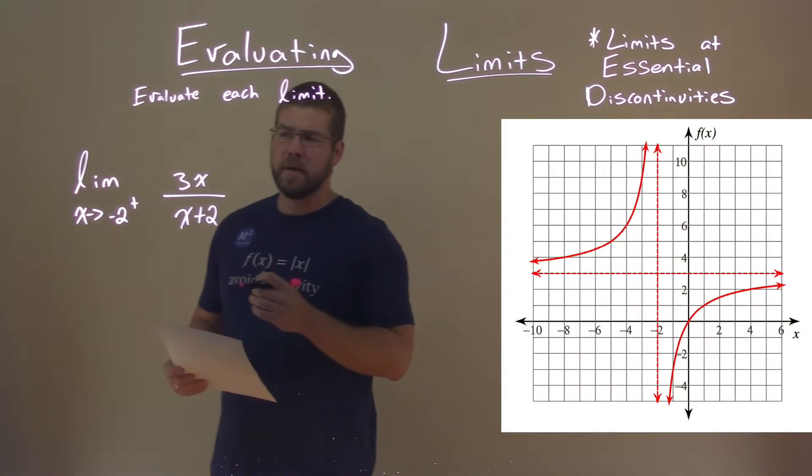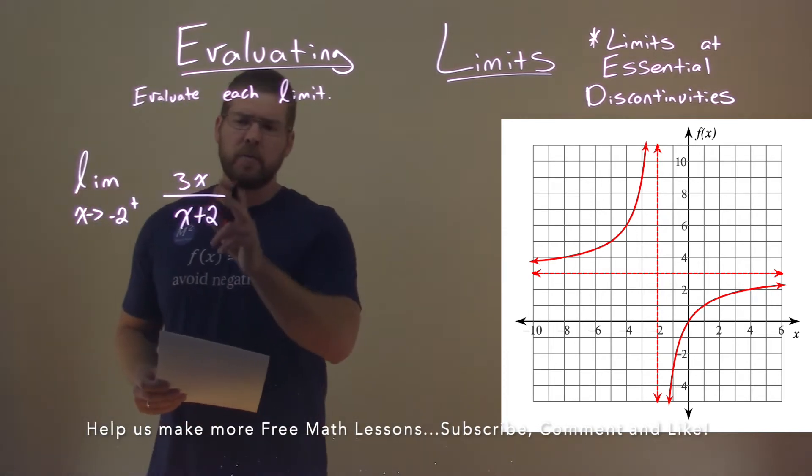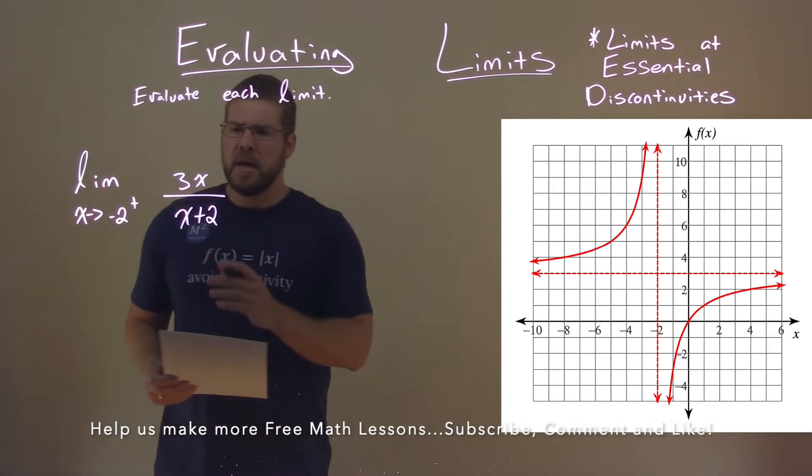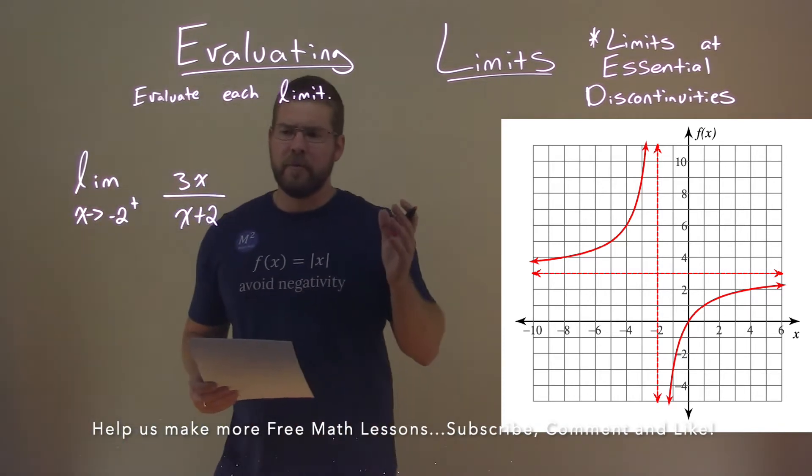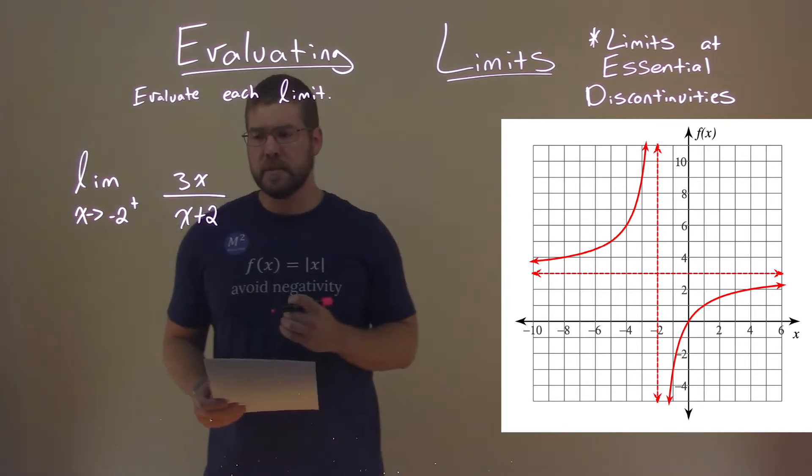We're given this limit right here, the limit as x approaches negative 2 from the right of 3x over x plus 2, and we need to evaluate this limit. Now it's tricky here. We can see our graph, but what's tricky is that at negative 2, we can't just plug it into x, right? It'd make the denominator equal to 0.